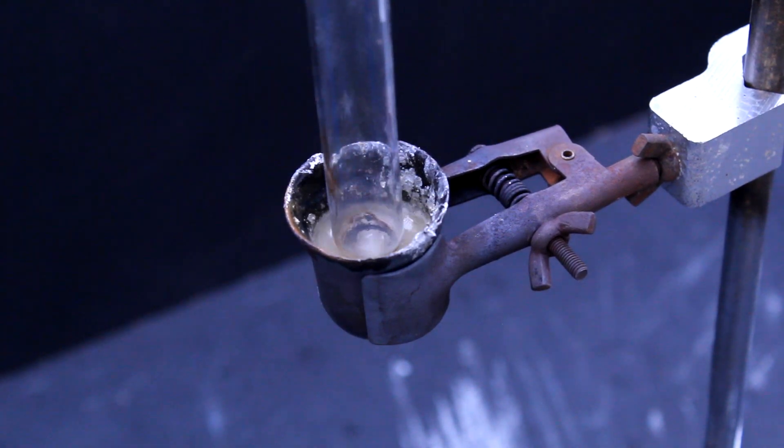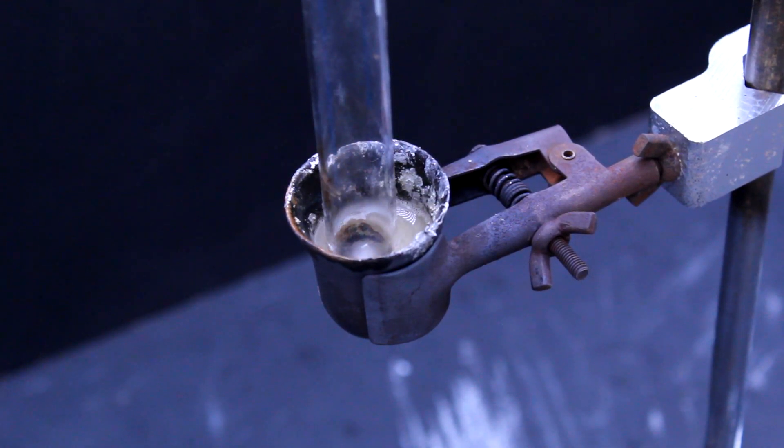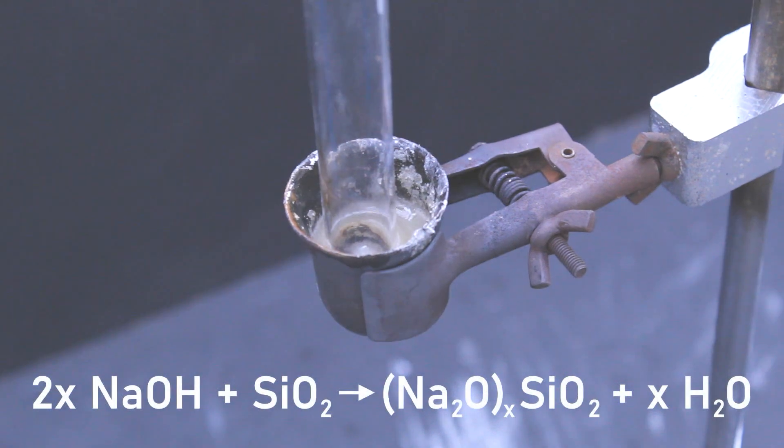Once the sodium hydroxide is molten, submerge the glass you wish to dissolve into it. The sodium hydroxide will now slowly begin to act on the glass, turning it into water vapor and a chemical known as sodium silicate.